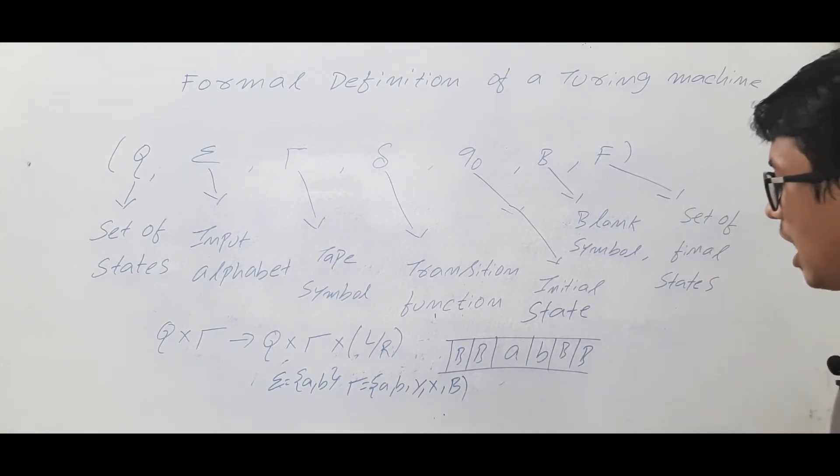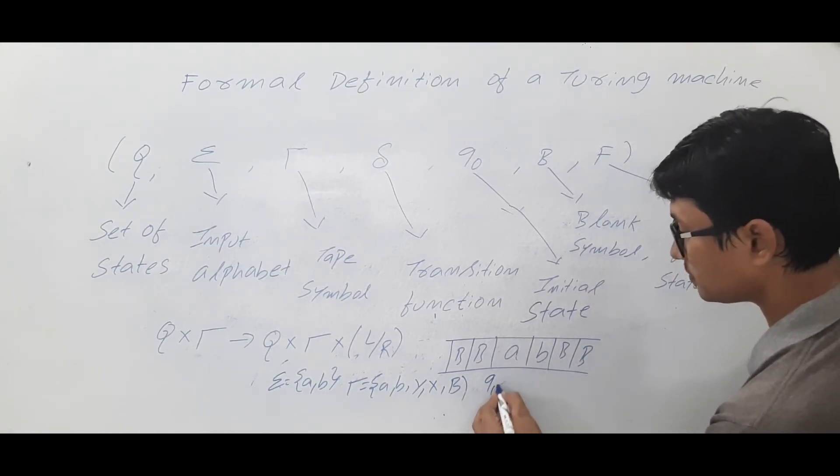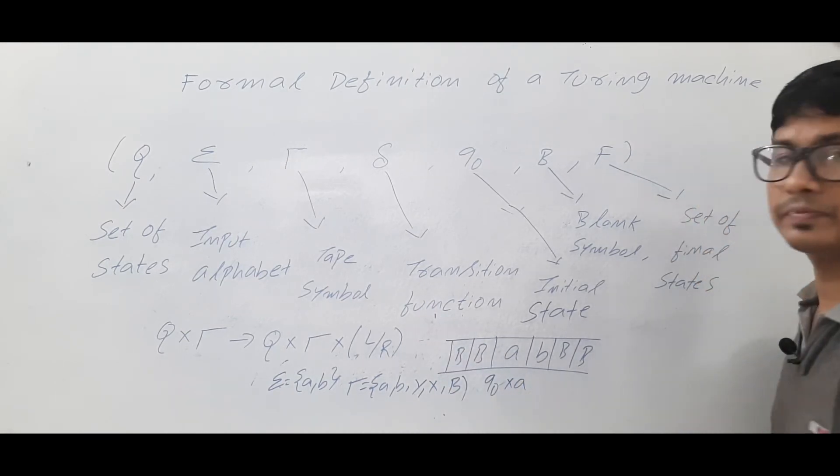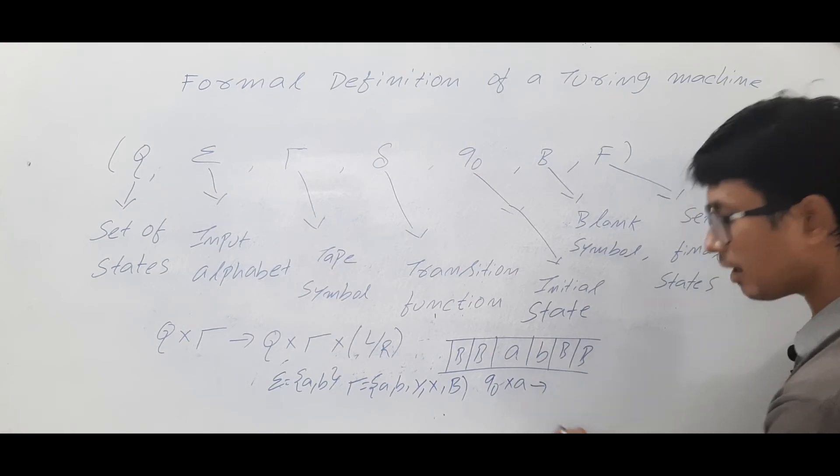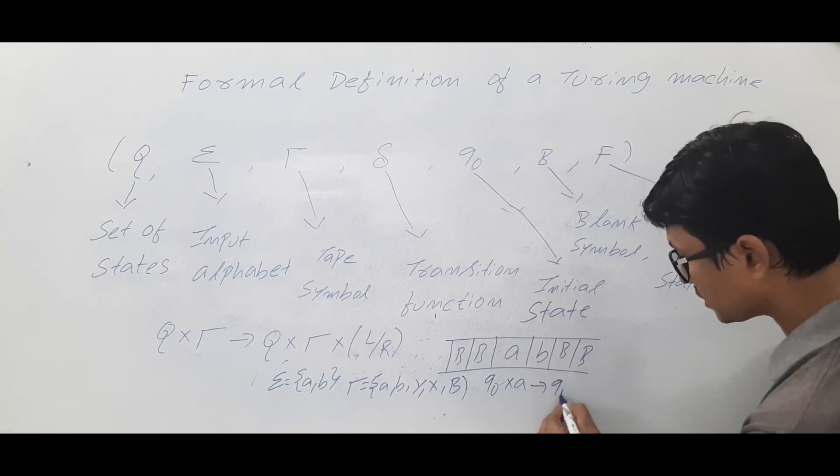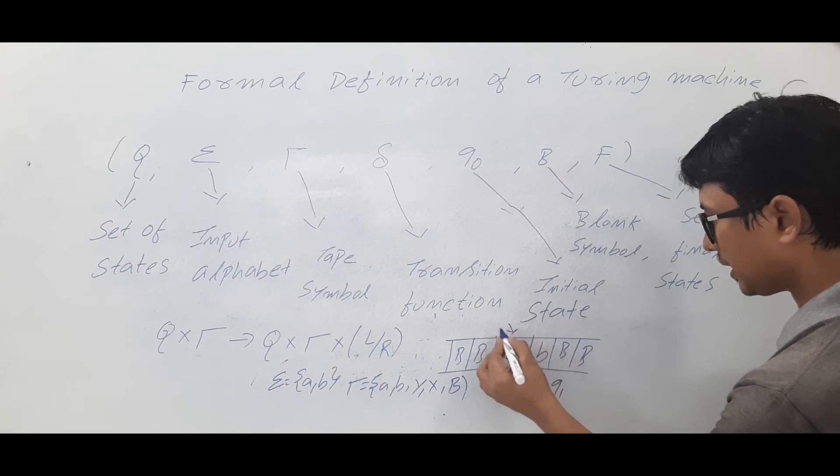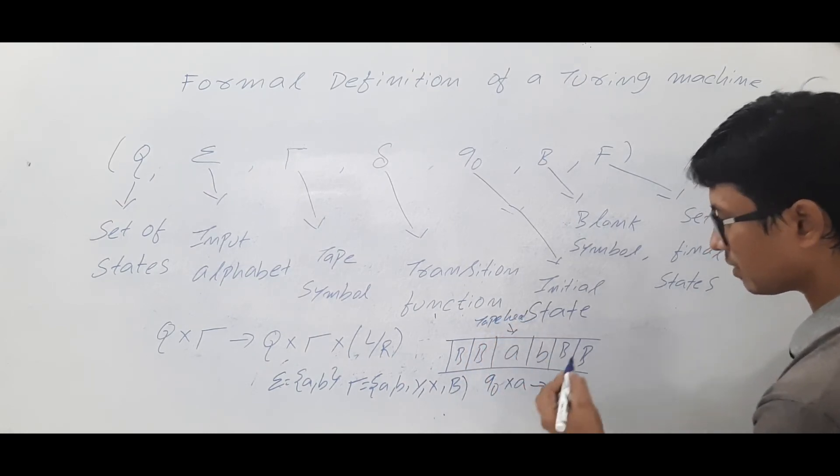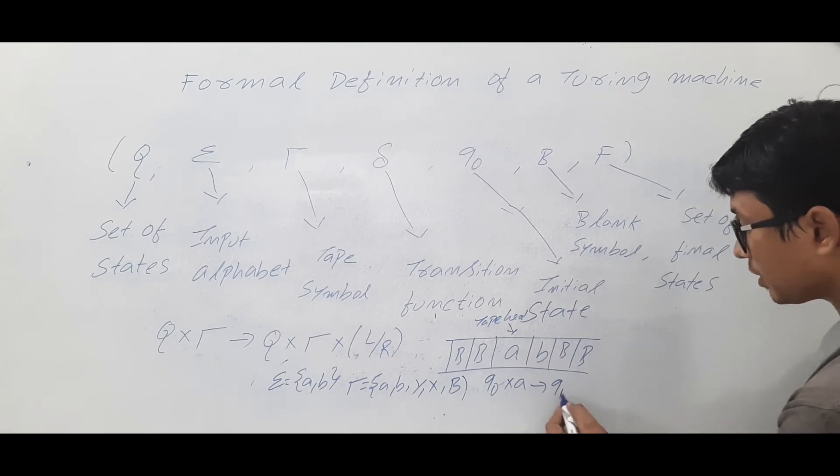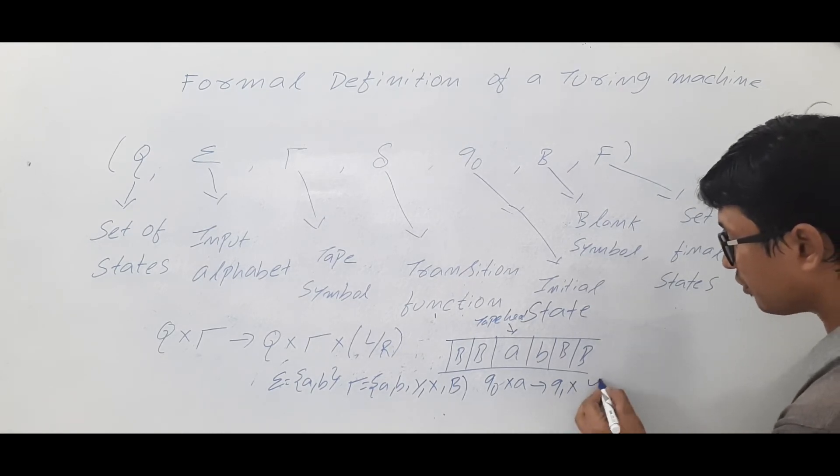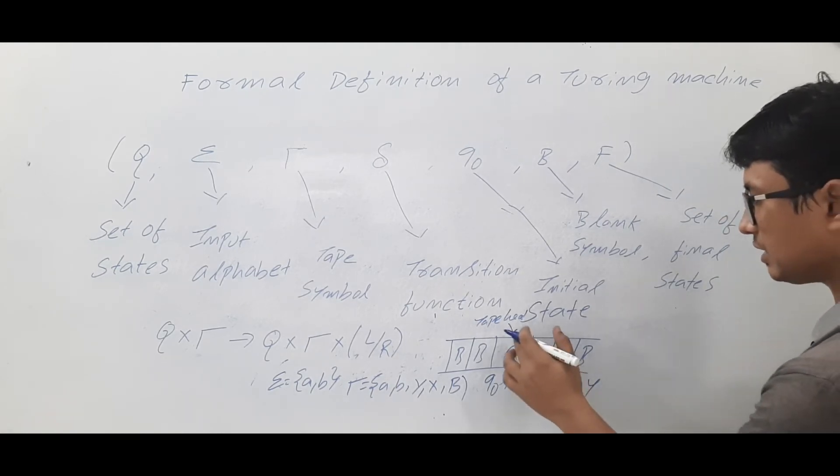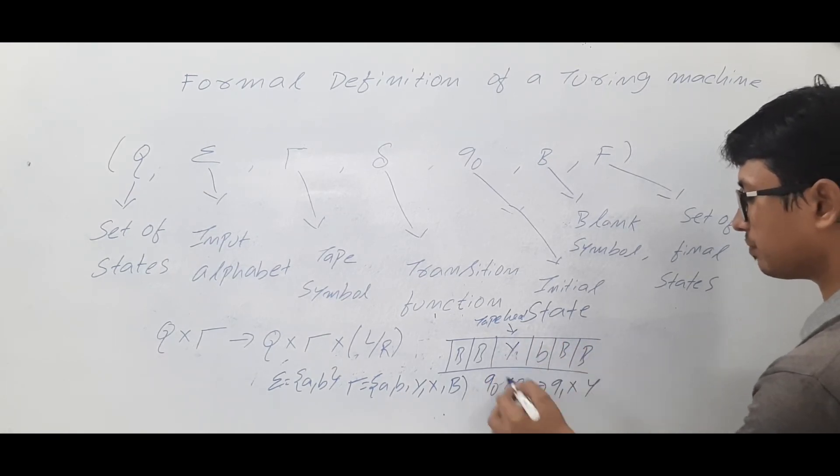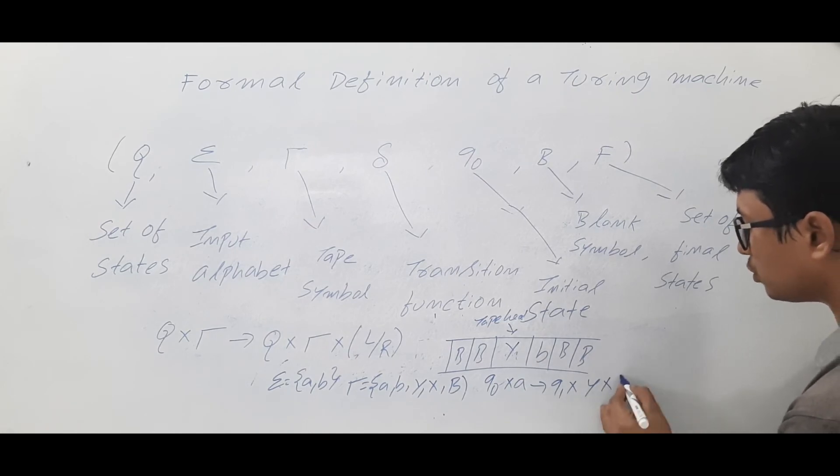Now let's take that I am in a state q0, I am looking at a tape symbol a, and I am going to a state called q1. Right now my tape head is here, so that's why I can read the value a. q1, and I am modifying it to y - meaning that currently the tape head is reading it as a and I am modifying it to y, and I want to move to the right side.